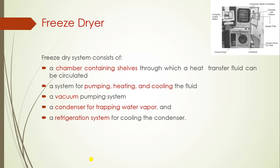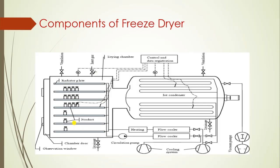The basic components of a freeze dryer instrument consist of a chamber containing cells through which a heat transfer fluid can be circulated. That chamber is also called the freeze dryer chamber or cabinet, a system for pumping, heating and cooling the fluid, a vacuum pumping system, a condenser for trapping water vapour, and a refrigeration system for cooling the condenser. As you can see in this diagram, these are the different components of the freeze dryer that I have already explained.